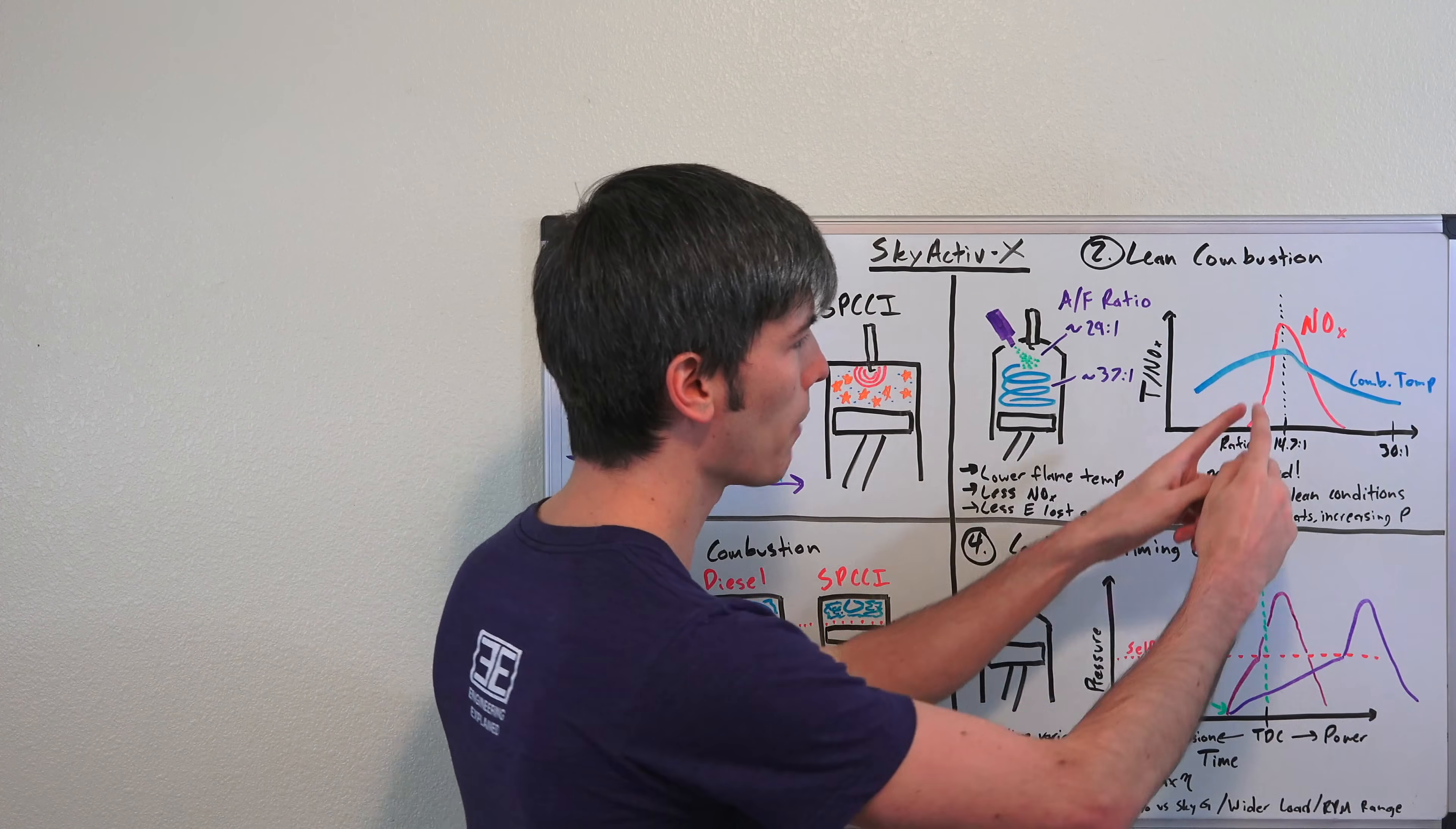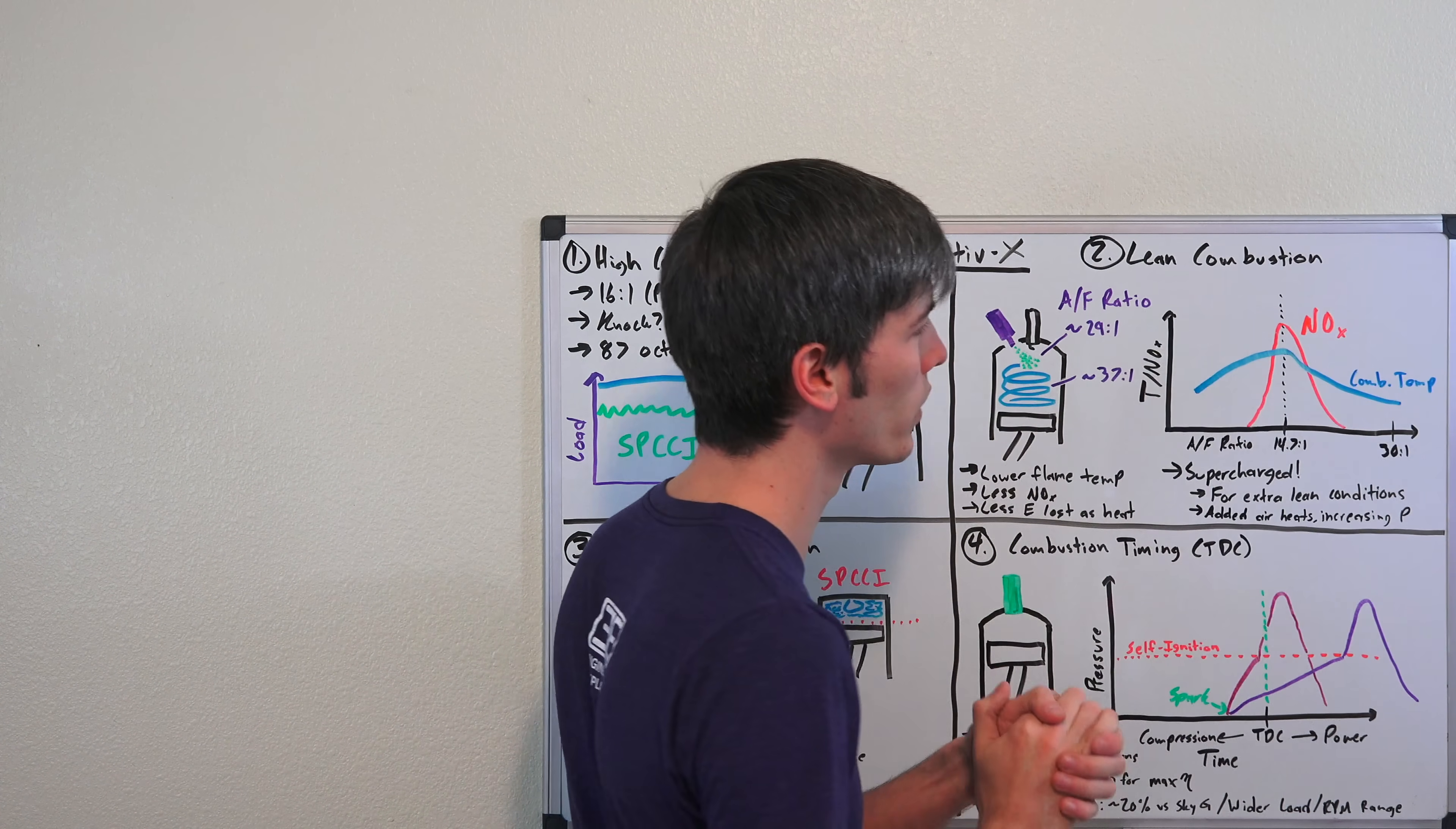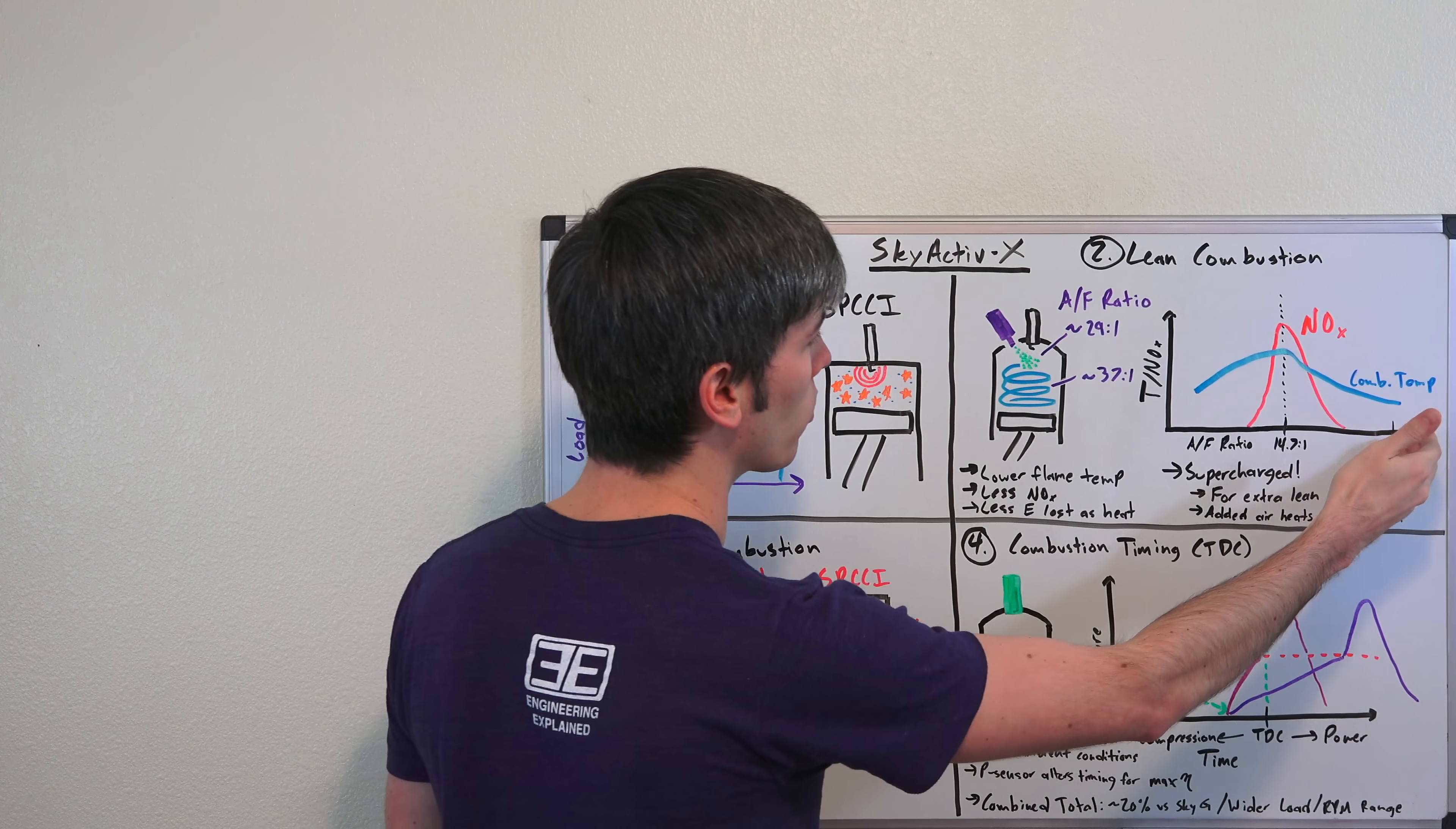A lot of people say that as you lean out an air fuel ratio, it burns hotter. That's not actually true. Here we're looking at a plot of air fuel ratio. Here would be a rich air fuel ratio, here would be very lean, 14.7 to 1 is stoichiometric or the ideal air fuel ratio where all your fuel and air is burned completely. That's where your peak combustion temperature is and where your peak nitrous oxide emissions are. By leaning out that ratio the combustion temperatures start to fall and your nitrous oxide emissions just completely plummet. So there's a huge benefit if you can run it really lean.